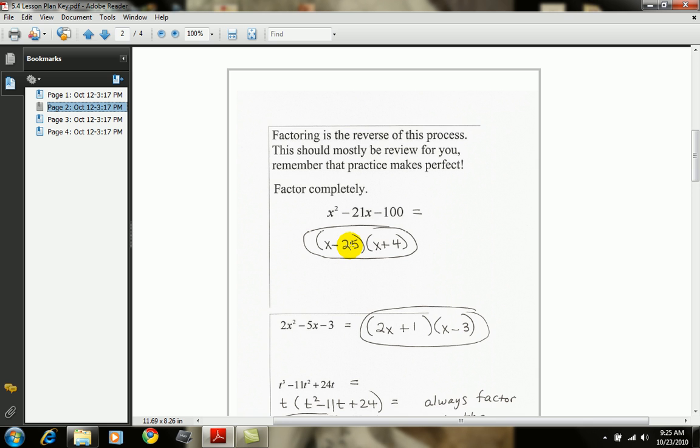But notice what happens here. I call this the chin and grin way to check it. The chin, I call that that little inner product. Negative 25 times x is negative 25x. The grin is my outer wide grin, which would give me a product of 4x.